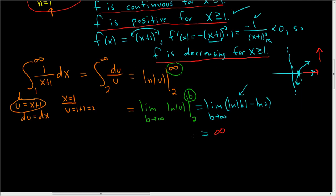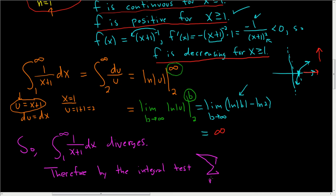So what does that mean? We took our improper integral and we got infinity. So that means this integral here diverges. And that means by the integral test, our series diverges as well. Therefore, by the integral test, our series, the sum as n runs from 1 to infinity of 1 over n plus 1, diverges as well.